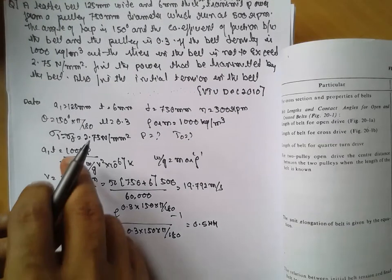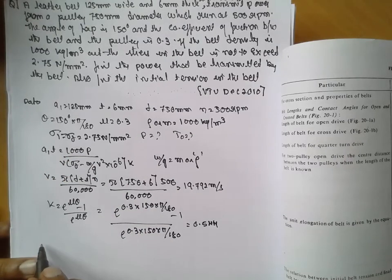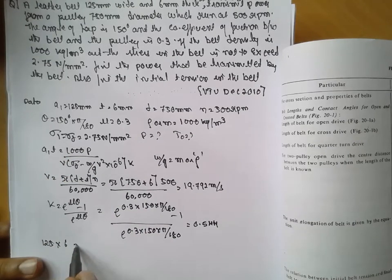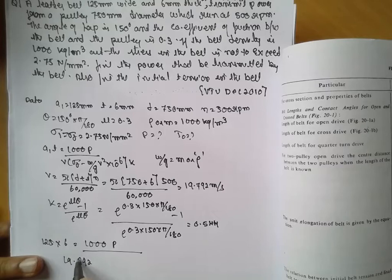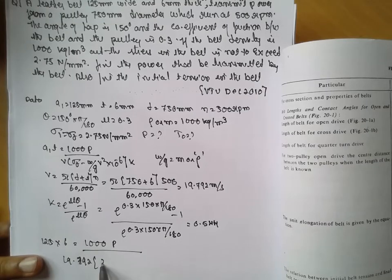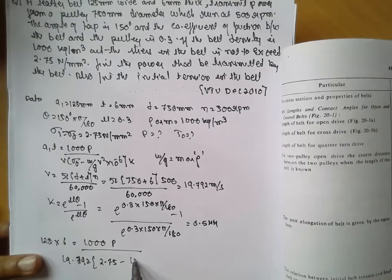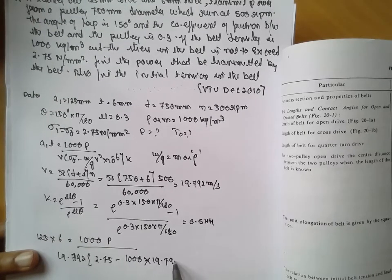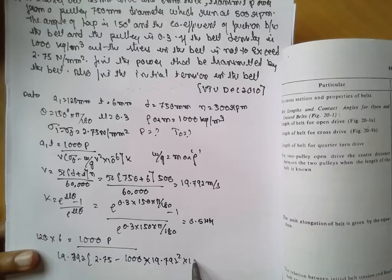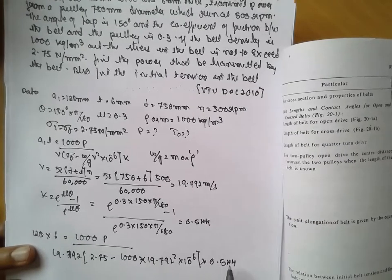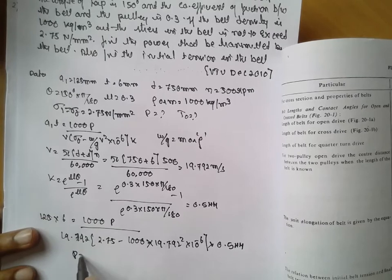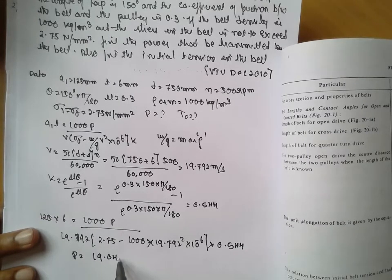Now substituting in the formula: 125 × 6 = 1000P / 19.792 = (2.75 − 1000 × 19.792² × 10^(−6)) × 0.544. The answer for power P is equal to 19.04 kW.